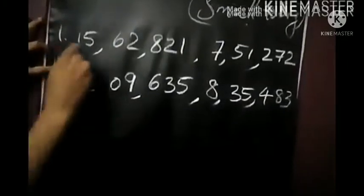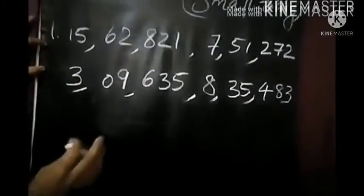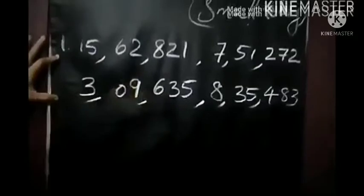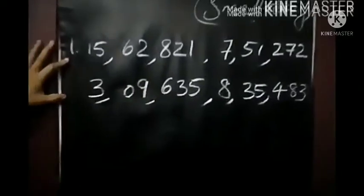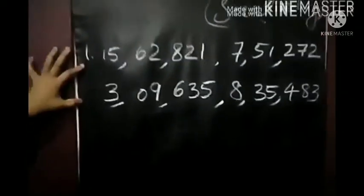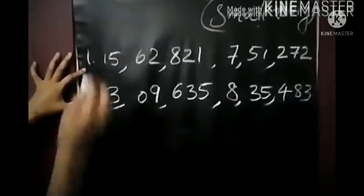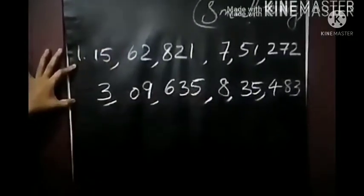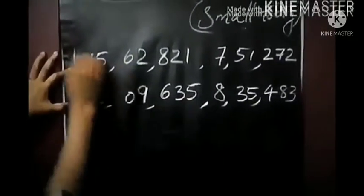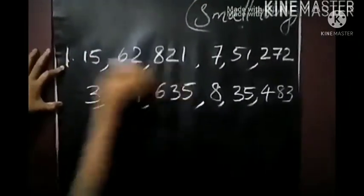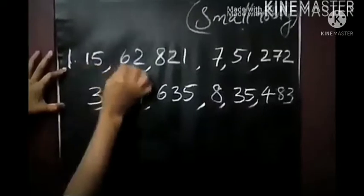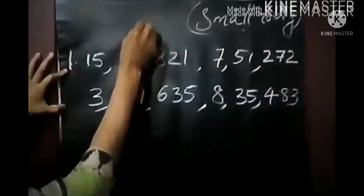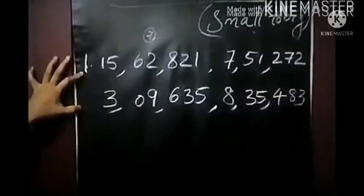How will we arrange these in ascending order? First of all, listen and count the digits. How many digits does each number have? The first number has 7 digits: 1, 2, 3, 4, 5, 6, 7 — yes, 7 digits.